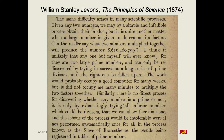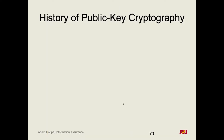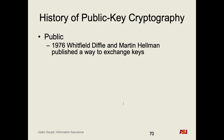'The work would probably occupy a good computer for many weeks, but it did not occupy me many minutes to multiply the two factors together.' Essentially he's saying it took two minutes to multiply two prime numbers together to get that number, but it would probably take a person two weeks to derive those factors. Taking these ideas — multiplication that is very quick for one party to do, and factoring a large number into its constituent factors is very difficult and takes a long time — is basically the basis of modern public key cryptosystems. Somebody in 1874 was talking about this problem, and it is the basis of modern public key cryptography.